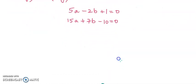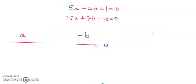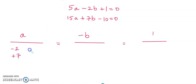Here my variables are a and b, so I have to write a upon, minus b upon, and 1 upon. For a, we put the coefficient of b and the constant. The coefficient of b is negative 2 and 7, and the constant numbers are plus 1 and minus 10.